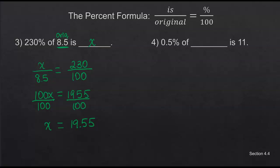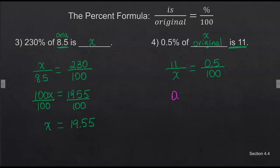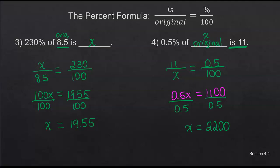Next: 0.5 percent of what is 11. The original is x, and 11 goes in for the 'is.' We know the percent is 0.5, and of course we have the 100. So: 11 over x equals 0.5 over 100. Cross multiply: 0.5x equals 1,100. Divide to solve — how many halves are in 1,100? Double it — x equals 2,200. When it comes to commas, you can put them in or not, either way is fine.